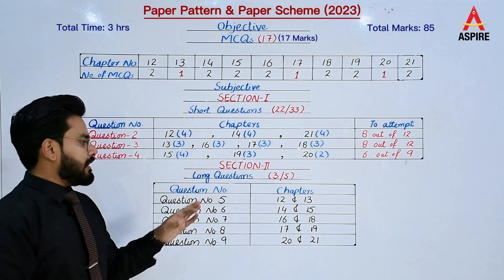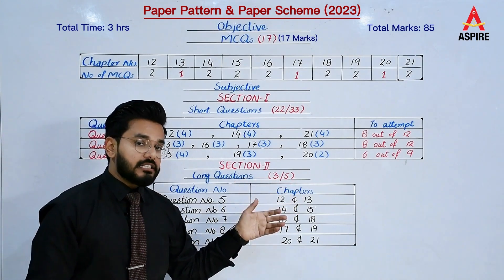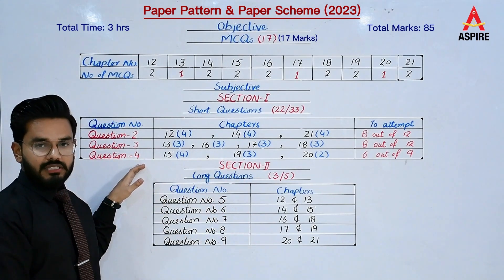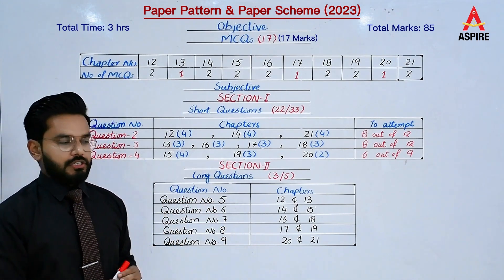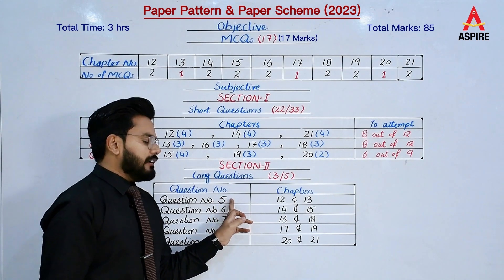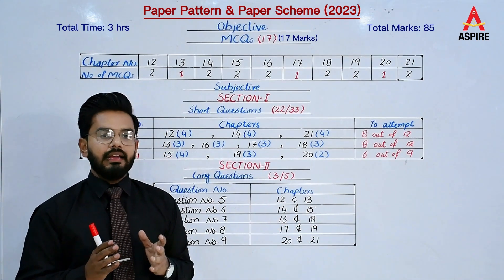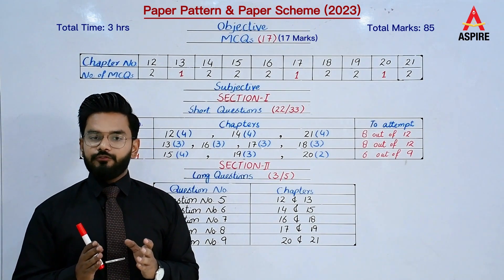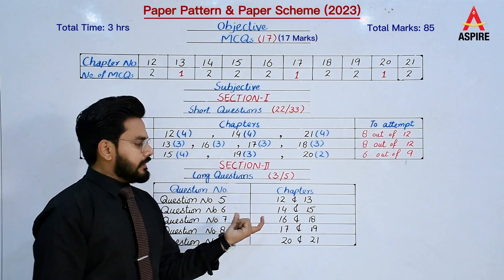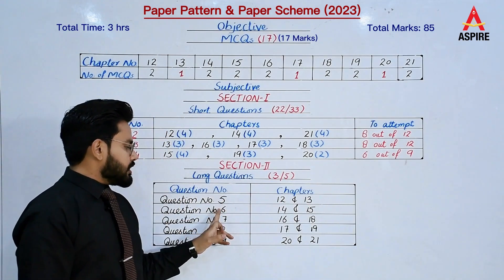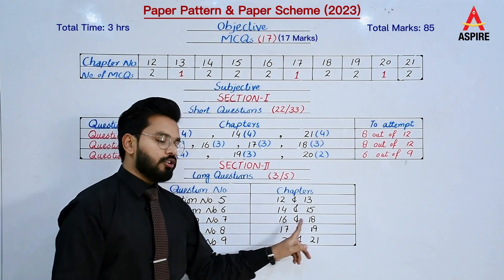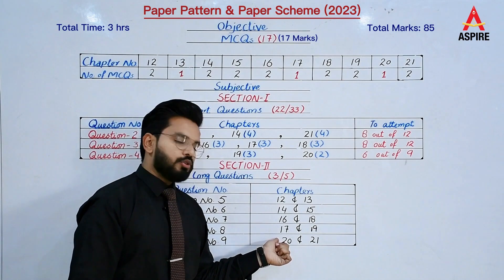Now the long question section: there are 5 long questions and you have to answer 3. In physics we have two parts — Part A and Part B. Question 5 covers chapters 12 and 13, which may include a numerical. Question 6 covers chapters 14 and 15. Question 7 covers chapters 16 and 18. Question 8 covers chapters 17 and 19. Question 9 covers chapters 20 and 21.